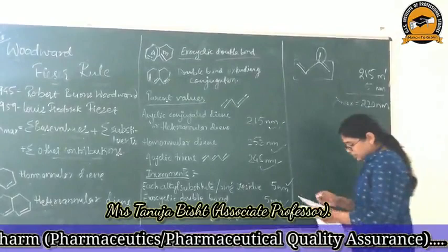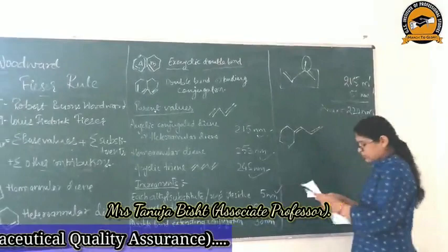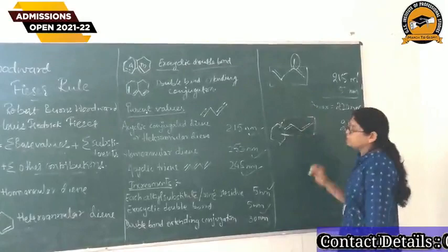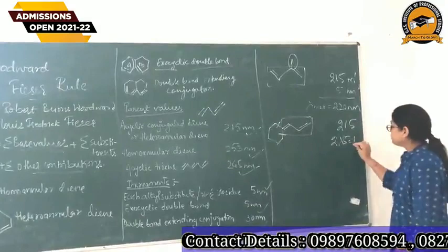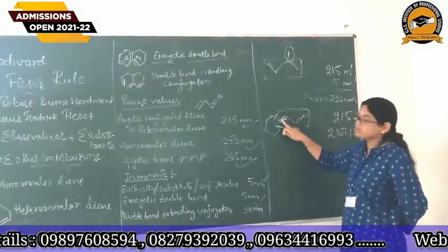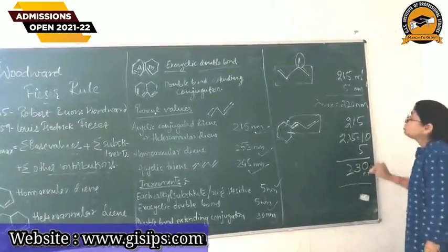One more example. If you see, this is your base value — it will be 250. Then, from this we can see one alkyl substituent is there, this one, and then one alkyl substituent is this one. So we have two alkyl substituents — this will be 2 into 5, that is 10. And there is one more exocyclic double bond — if we can see here, this is the exocyclic double bond. So for that we can add one more 5 nanometers. So this will be 230 nanometers.